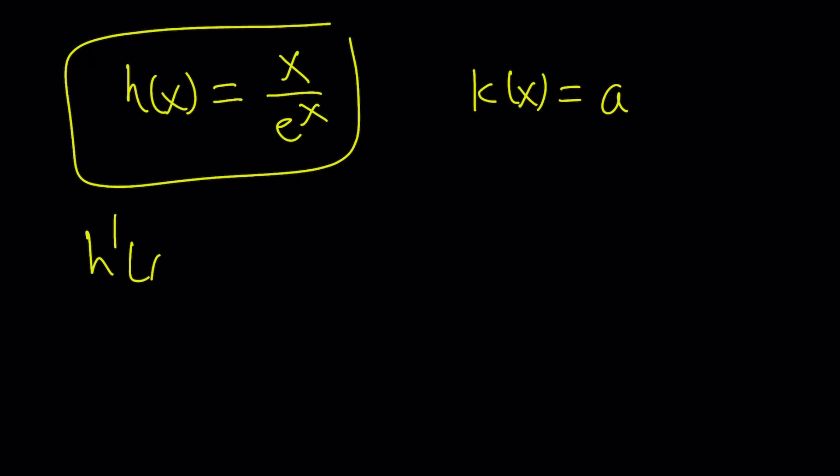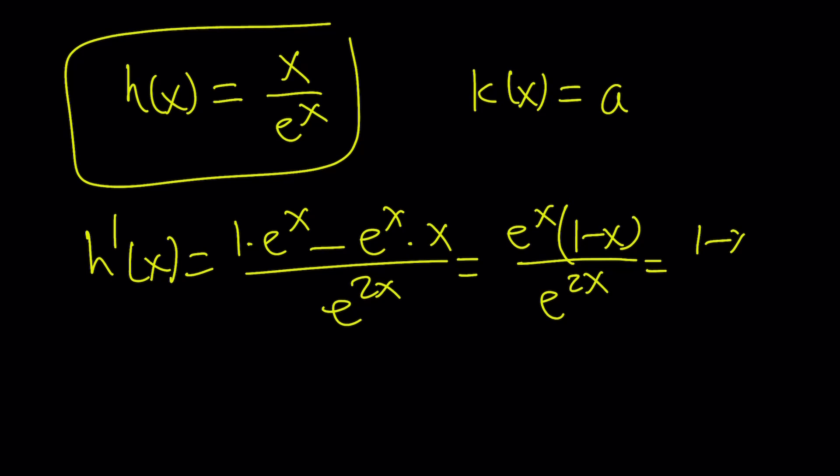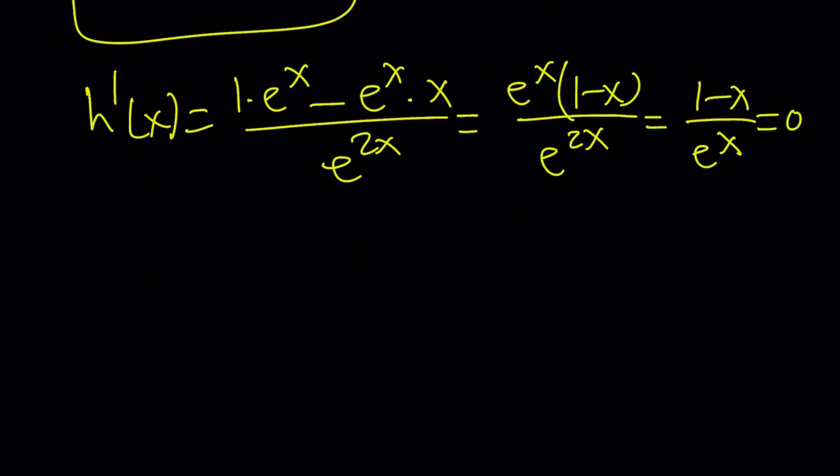The derivative of h is the derivative of x multiplied by e to the x minus the derivative of e to the x multiplied by x divided by e to the power x squared, which is e to the power 2x. Now let's write it as e to the x times 1 minus x divided by e to the 2x. If you want, you can simplify this as 1 minus x over e to the x, which is not super important. But what's important, set this equal to 0, and we get x equals 1.